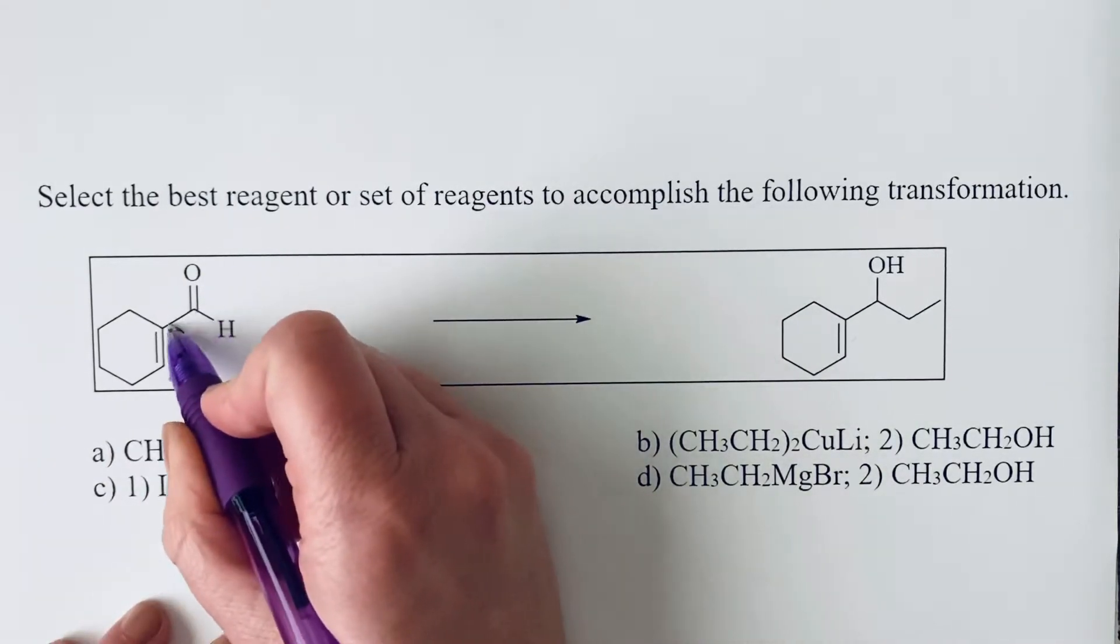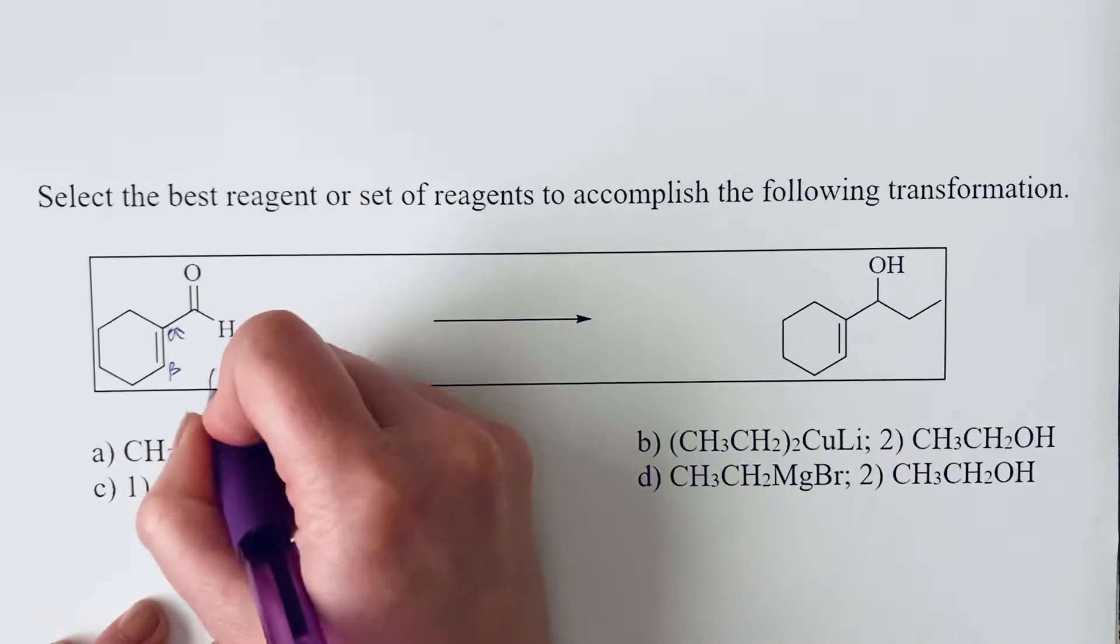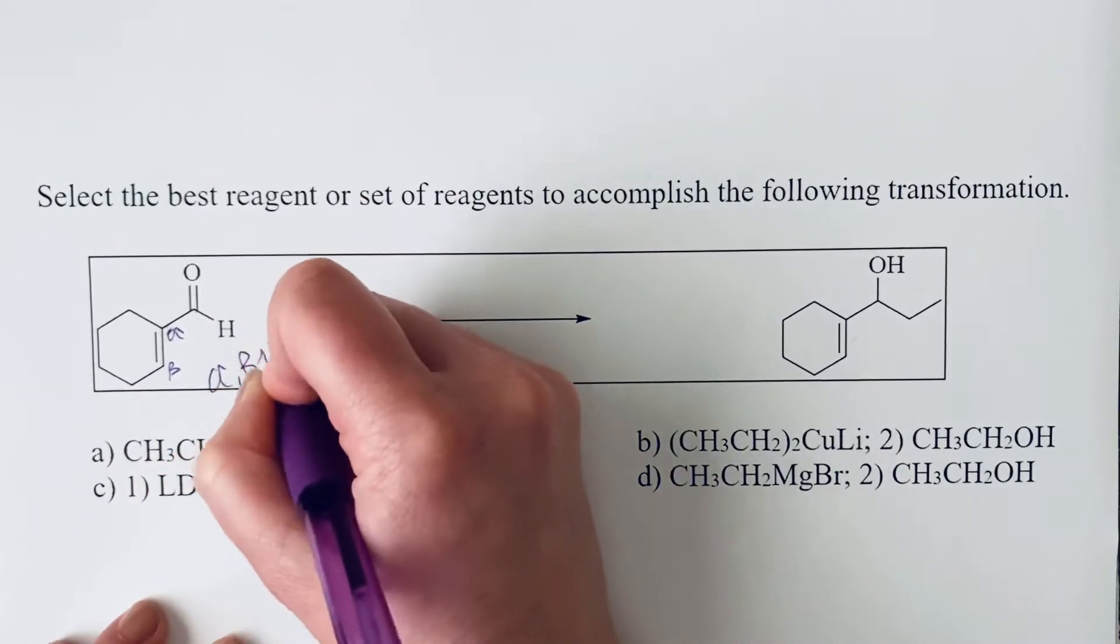And so we can also label this by the alpha and beta positions. So this is an alpha, beta unsaturated aldehyde.